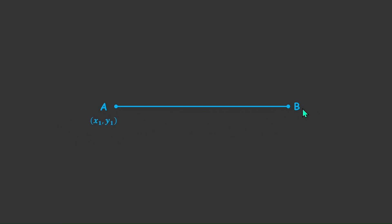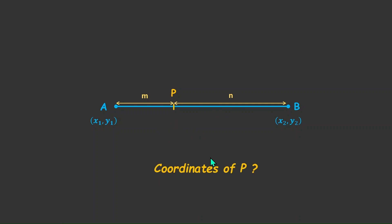Say we have a line segment AB and the coordinates of A and B are known. The coordinates of A are x1, y1 and B are x2, y2. There is a point on the line segment AB such that it divides the line segment AB internally in the ratio M is to N. The question is: can we find the coordinates of that point, given the known coordinates of A and B and also the ratio M is to N? Let's see how we can do that.